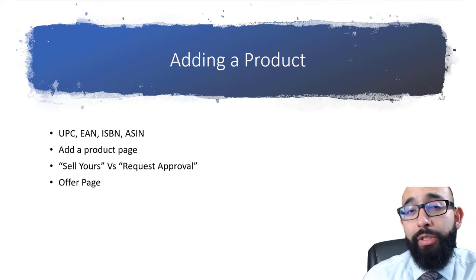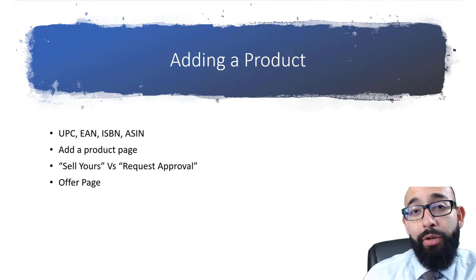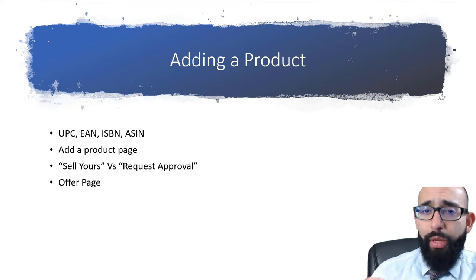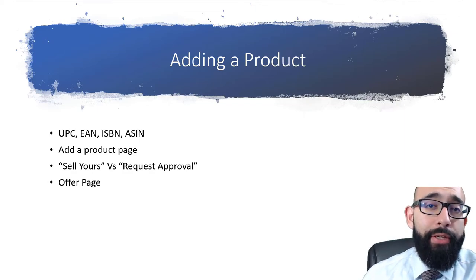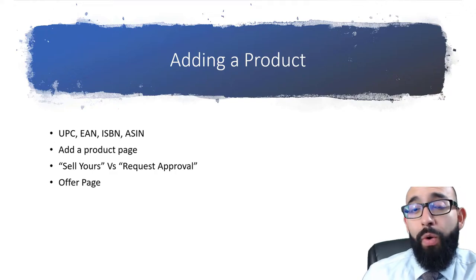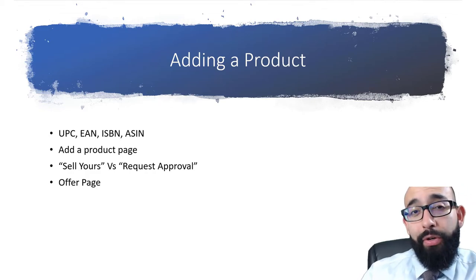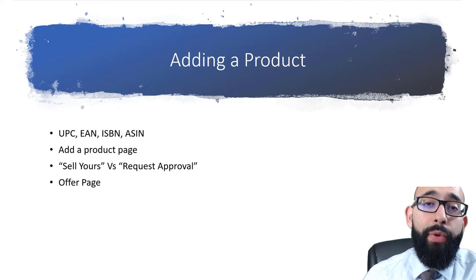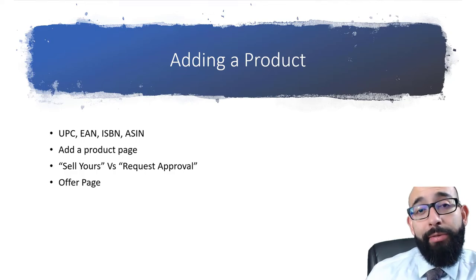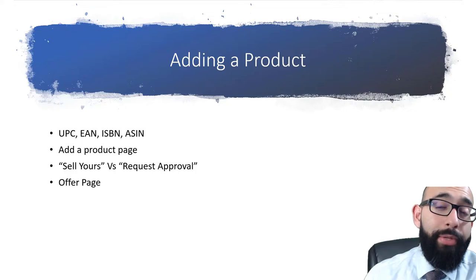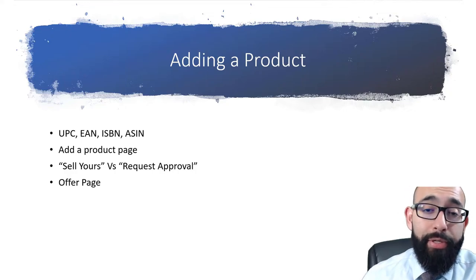For right now, let's talk about Sell Yours. When you're ungated, you'll have the Sell Yours tab, meaning you can sell your product, send it to Amazon, do FBA, or even FBM. Once you click Sell Yours, it takes you to your offer page. From there, you put the condition, the price you want to sell it at, and the quantity. I always put zero because I like to convert items from FBM to FBA — I'll show you how to do that. The main thing to put is the condition; most items you get are going to be new unless they have dings or are already used.